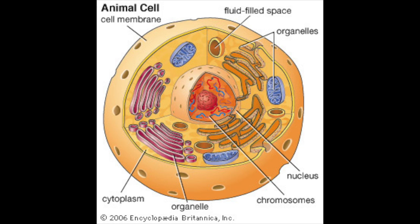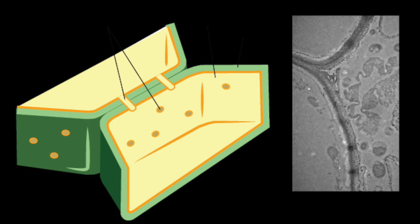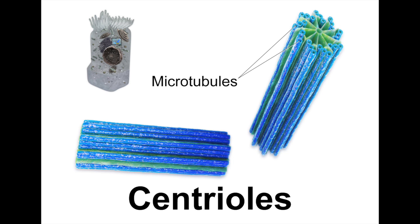The function of the cell wall and membrane is to protect the internal functions of the cell. The centriole is a much less well-known part of the cell. Its function is to form fibers into separate chromosomes during cell division, and it looks like a churro.